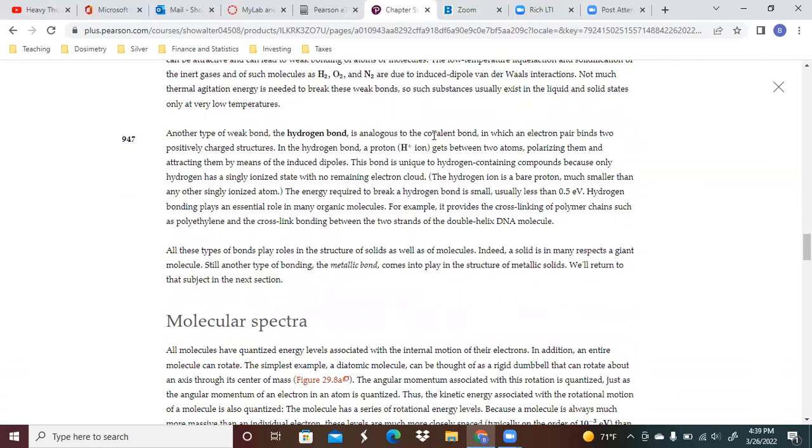Another type of weak bond, the hydrogen bond, is analogous to the covalent bond in which the electron pairs bind two positively charged structures. In the hydrogen bond, a proton gets in between two atoms, polarizing them and attracting them by means of the induced dipoles. This bond is unique to hydrogen-containing compounds because only hydrogen has a single ionized state with no remaining electron cloud.